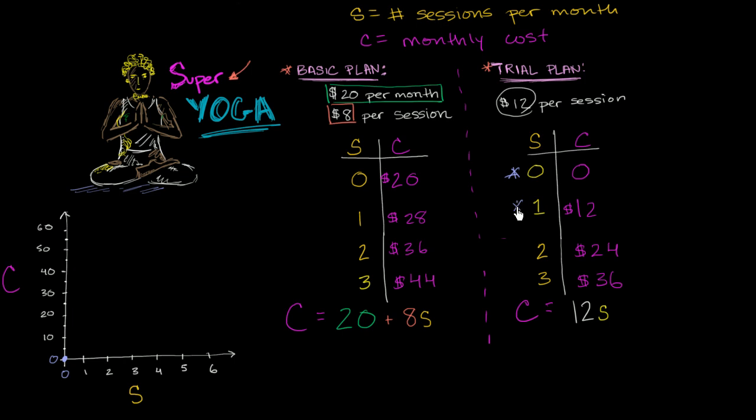Now let's think about if I attend one session. If I attend one session, it'll be $12. Where would I plot that? One session is going to cost me $12. This is $15, so $12 is going to be right around there.